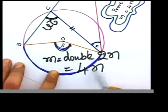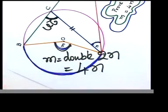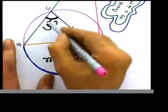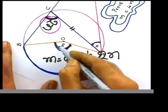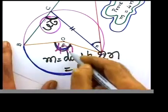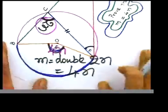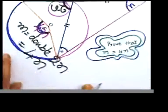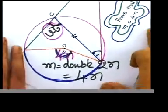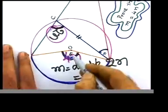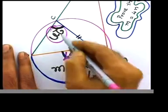m equals double 2n, which is nothing but 4n, because if you double 2n you get 4n. So if the top angle is 2n, the bottom angle should be 4n. That's what they want you to prove: prove that m equals 4n — and we got m equals 4n.